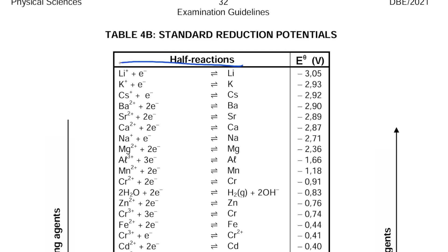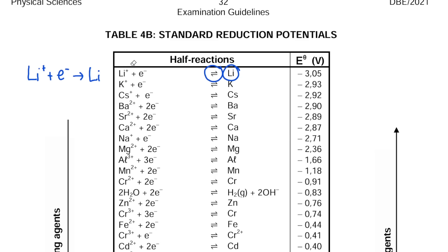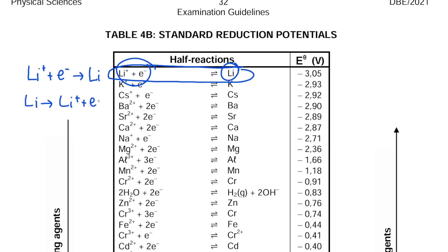If I take the first half reaction on the table — lithium ion plus an electron gives lithium — you'll notice the half reactions are written with a double arrow. This is because the reaction can be written in either direction. Written from left to right: Li+ plus an electron gives lithium. Or I can reverse it — start with the right-hand side, draw an arrow, and write the left-hand side. It's the same reaction, just written in reverse order.